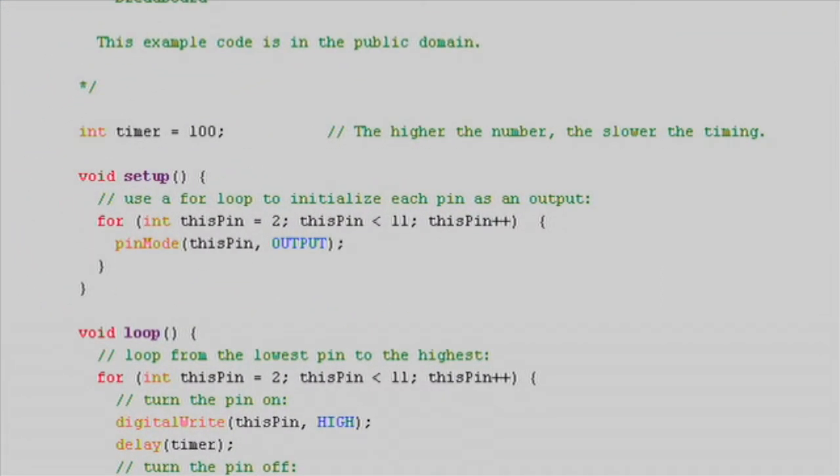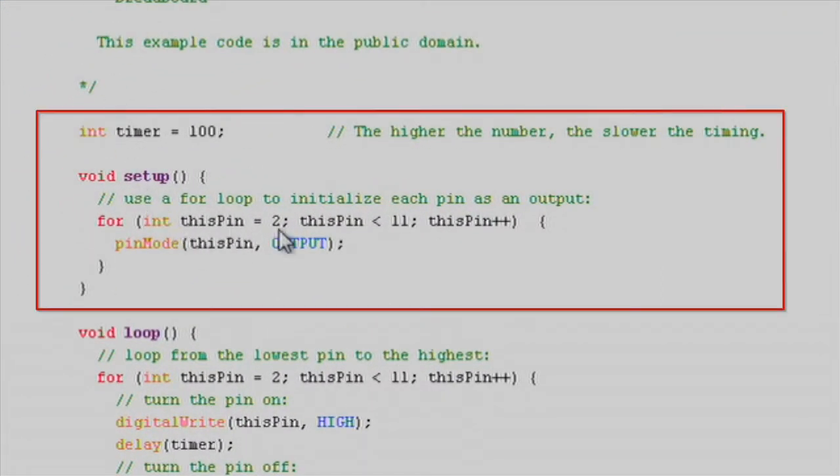In the setup, we configure pins 2 to 10 as output pins. Instead of using the pinMode function nine times, we will use it once within a for loop that iterates nine times to set the pins as output.